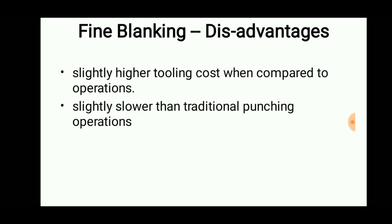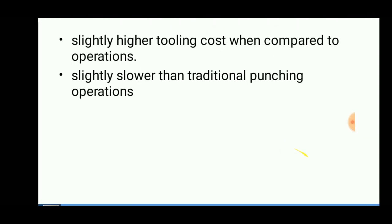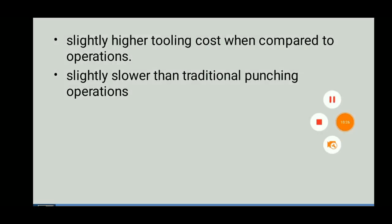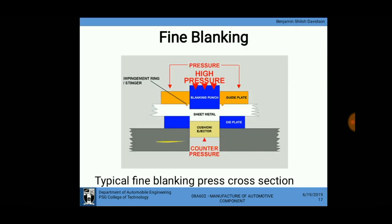Fine blanking is also slightly slower than traditional punching operations, because operating at high speed would compromise accuracy. It needs adequate time to perform the operation properly, making it slower than conventional processes.